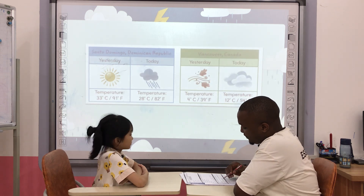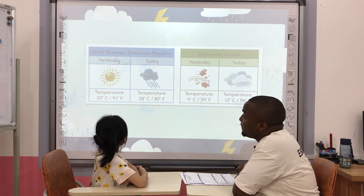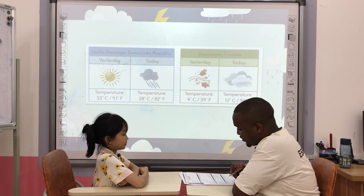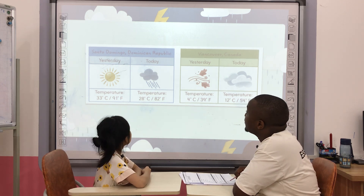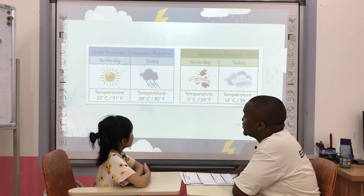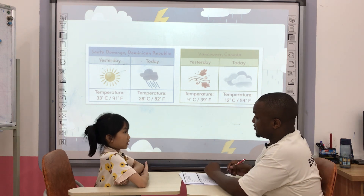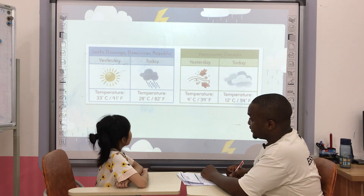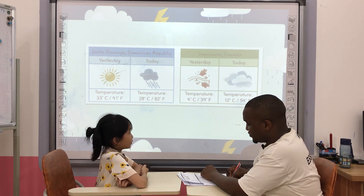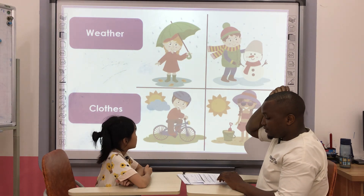And today is Wednesday — how is the weather? Very good. Now let's look at this weather forecast. How was the weather yesterday in Santo Domingo? Very good. And how was the weather yesterday in Makoba? It's windy and cool. Very good, that's great!